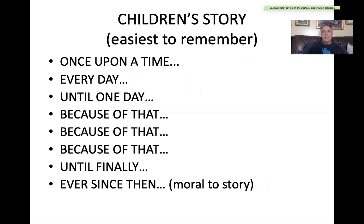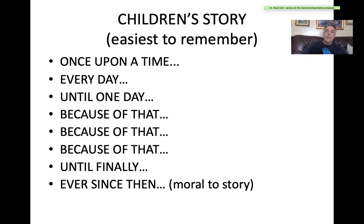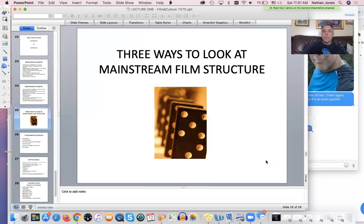Last but not least is the children's story structure — notice the similarities. 'Once upon a time' establishes person and place. 'Every day' describes the ordinary world. 'Until one day' is the inciting incident. 'Because of that, because of that, because of that' represents the midpoint crisis and escalation. 'Until finally' is the end of the second act — we return to the ordinary world with a gift. 'Ever since then' is the moral of the story. Anytime we get stuck in storytelling, it's good to come back to this.